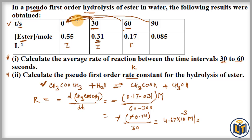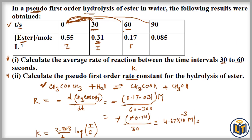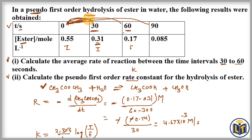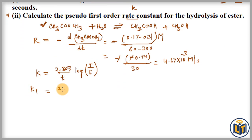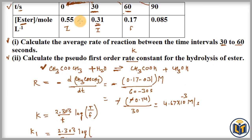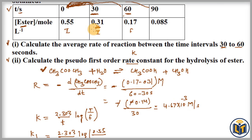For the time interval 0 to 30, this is the initial concentration of the reactant and this is the final concentration. We apply the formula for a first order reaction: k = 2.303 / t × log([A₀]/[A]). For this time interval I call the rate constant k1. So k1 = 2.303 / 30 × log(0.55 / 0.31), where 0.55 is the initial concentration and 0.31 is the final concentration at t = 30.